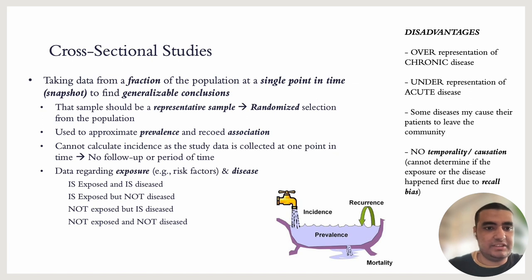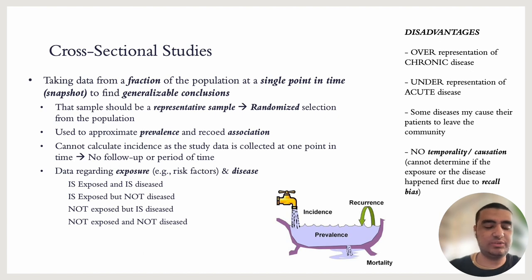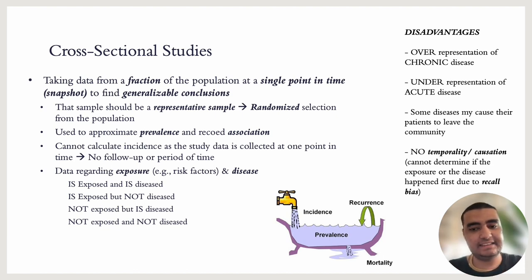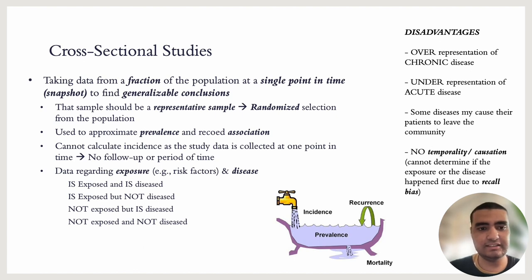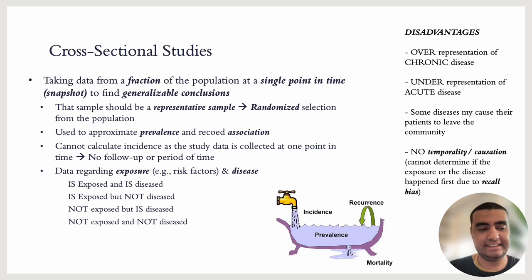Following that, we have cross-sectional studies. A cross-sectional study basically means taking a section out of the population — taking a snapshot of the population. You take a single or a group of individuals from the population, randomized in order to get the most accurate, non-biased results. You take random people from the population you are trying to study and collect data from them at one point in time — not over a duration, but at one specific moment. You gather them, take the data, and that's it.